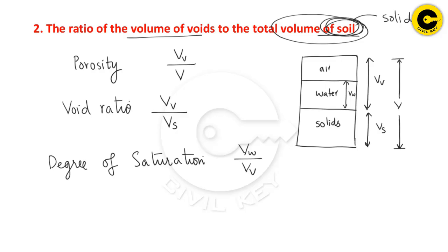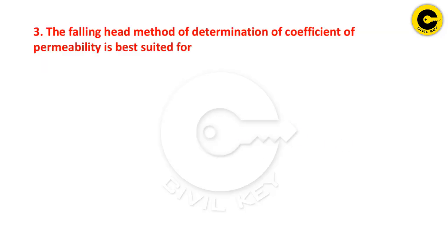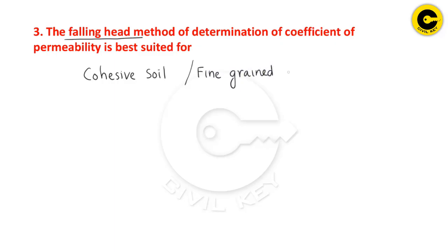What is the ratio of volume of water to volume of voids? That is the degree of saturation. The falling head method is used for the determination of coefficient of permeability for cohesive soils and fine-grained soils.